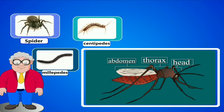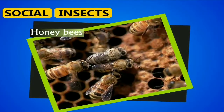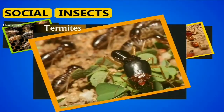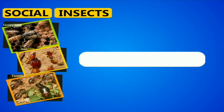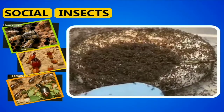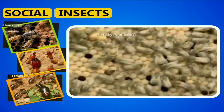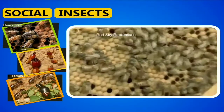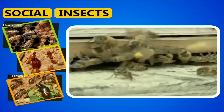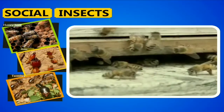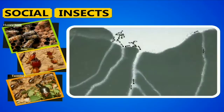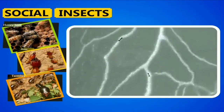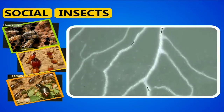They do not have three distinct body parts — head, thorax and abdomen — like insects. Social insects: Some insects like honeybees, ants and termites live together. The insects which live together are called social insects. Different activities like feeding the newborn, searching for food and shelter, protection and reproduction are done by different groups of insects. This system is called division of labor.